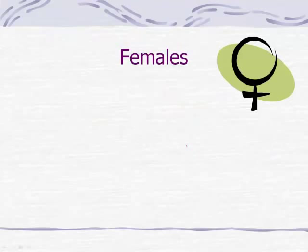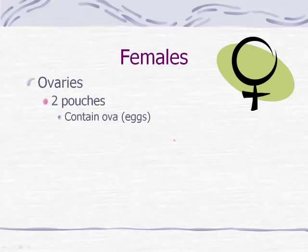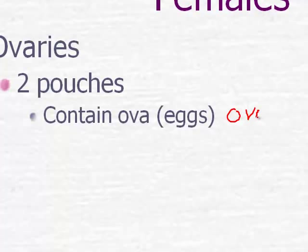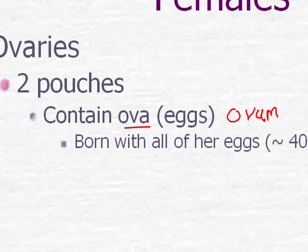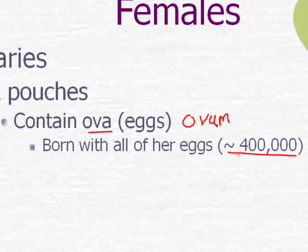Let's look more closely at females and basic female anatomy. The ovary is the female gonad - two pouches. Gonad is that generic term used for both males and females. The ovaries are what contain the ova - the singular is ovum. We're talking about ova, the plural, containing all the eggs the female is going to have. A female is born with all of her eggs while she is developing inside her own mother. She produces inside her ovaries roughly 200,000 eggs per ovary, so with two functioning ovaries she'd have about 400,000 eggs at her disposal as she reaches sexual maturity.